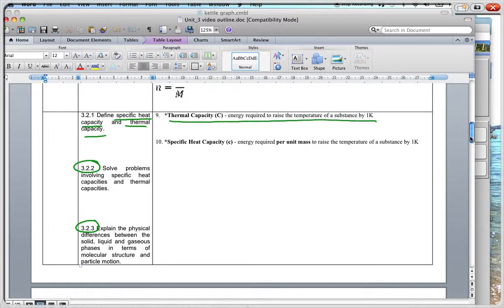The difference between thermal capacity and specific heat capacity. Specific heat capacity is the energy required per unit mass to raise the temperature by 1 Kelvin. So the unit for this would be a joule per kilogram per Kelvin.